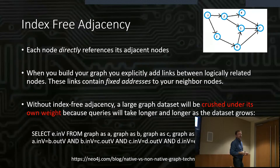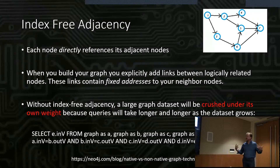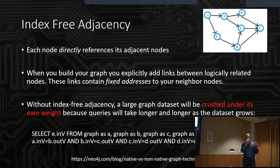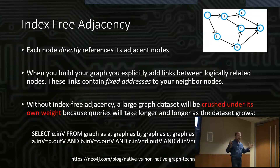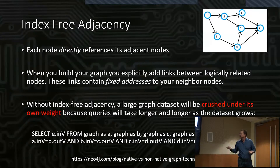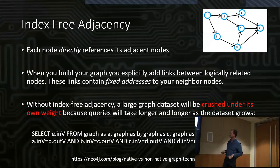As you might think, this is much more efficient than trying to bring together these tables. There's an obligatory SQL statement down here showing successive joins — one hop's not so bad, but as you do two hops, three hops, four hops, five hops, your join table gets rather large. Without index-free adjacency, a large graph data set will be crushed under its own weight, because the queries will take longer and longer as the data set grows — and that claim comes from Neo4j, a graph database vendor.